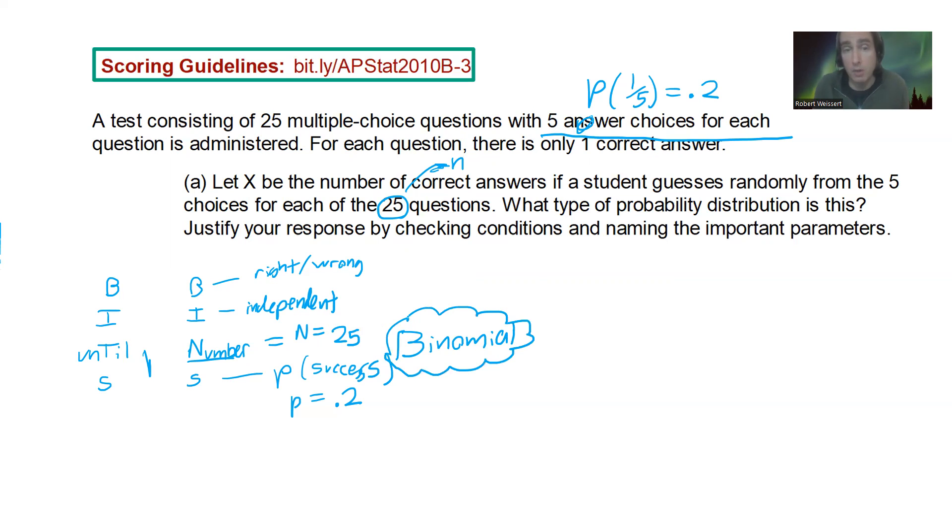So we want to make sure we write the word binomial in this case here. If you don't put the word binomial, you won't get it correctly. So it's not going to be geometric. Bits would be geometric. So I'm gonna go over here and just kind of cross that out over there. Bins is what we're looking for. Binomial, binary, independent set number, and the probability of success does not change. It's 0.2 or one fifth. And that's all for part A, just identifying the correct probability.